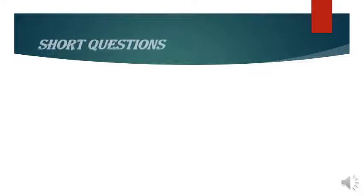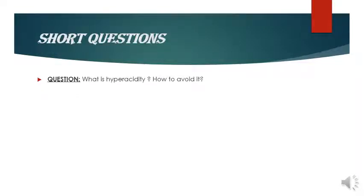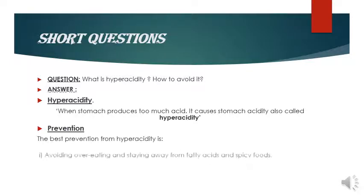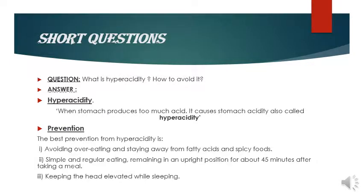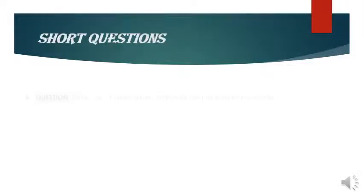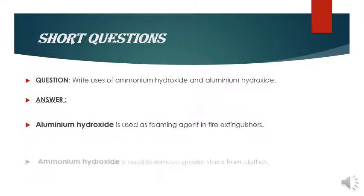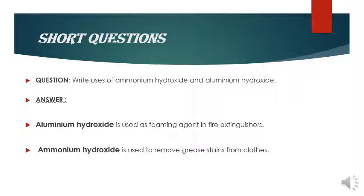Now move on to short questions. First question: what is hyperacidity and how to avoid it? Write a definition of hyperacidity and then three prevention points — this way you can gain 2 marks. Another question: write the uses of ammonium hydroxide and aluminum hydroxide. With uses of these bases you can gain 2 marks. Attempt all short question topics in your paper.